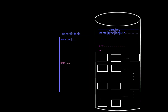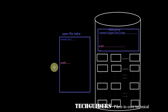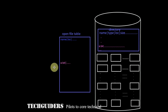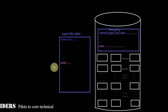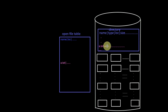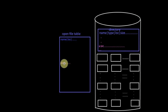The open file table contains the list of all open files and the information about them. Whenever a file is referred to by a process, an open system call will be made. Some systems implicitly open the file, while others require the programmer to explicitly open it. This open operation will search the directory with the specified file name and whenever the entry is found, the information about the file is copied to the open file table.